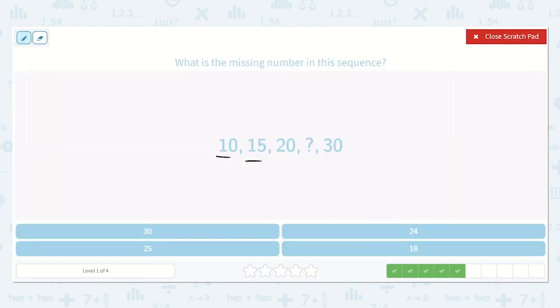Alright. 10, 15, 20, something, and then 30. Again, I see this number is going up by 5s. So 10, 15, 20. Now we'll still be in the 20s. It'll be 20, what? Yeah, 5. 25, 30.